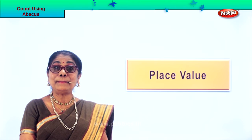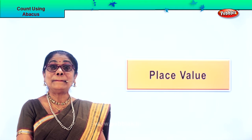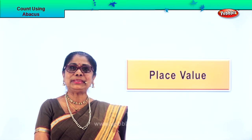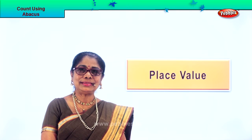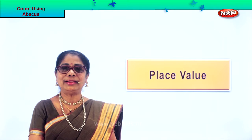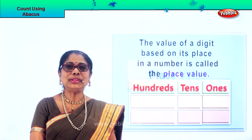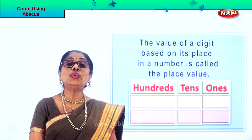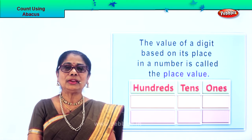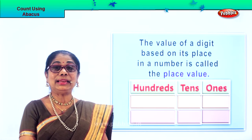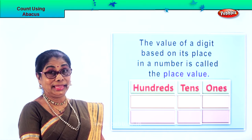You look at numbers and the place value. Where does the number stand? Is it ones? Is it tens or hundreds? And accordingly you read aloud the number. Look at this now. Let's read together. Read with me.